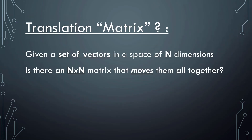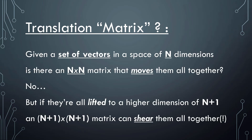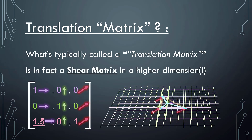Given a set of vectors in a space of n dimensions, there is no n by n matrix that moves them all together. However, if we lift them into a higher dimension of n plus one, then an n+1 by n+1 matrix can shear all of them together. What is typically called a translation matrix is in fact a shear matrix in a higher dimension, and that applies to any number of dimensions.